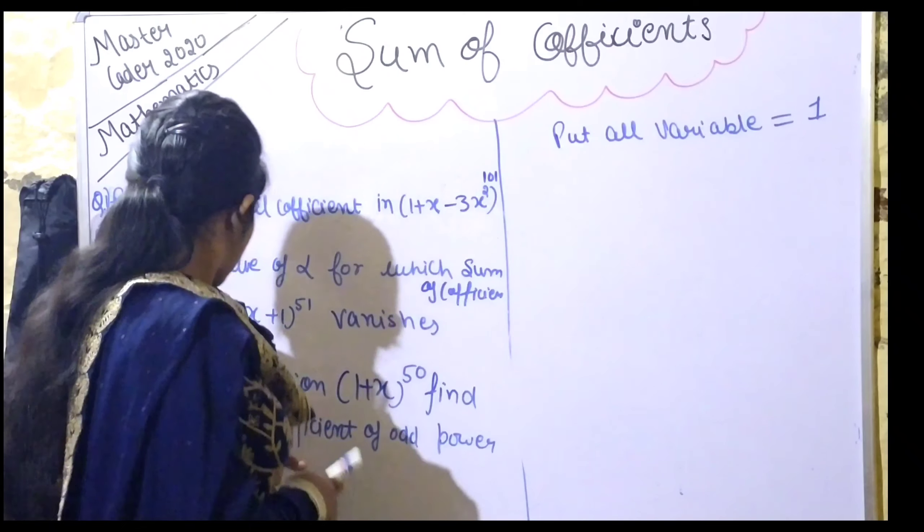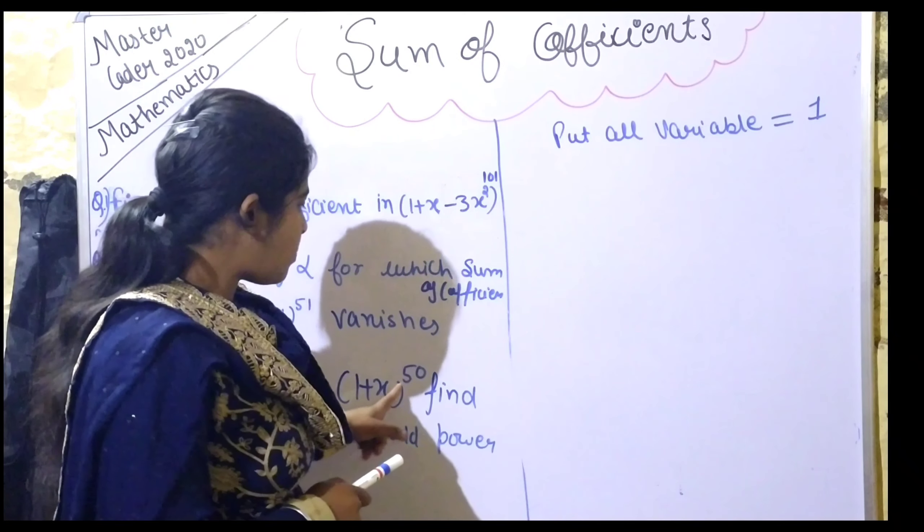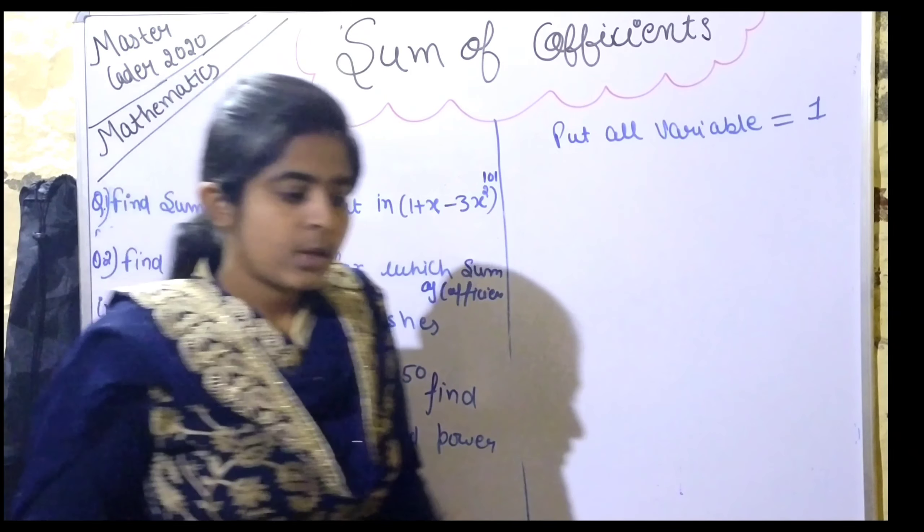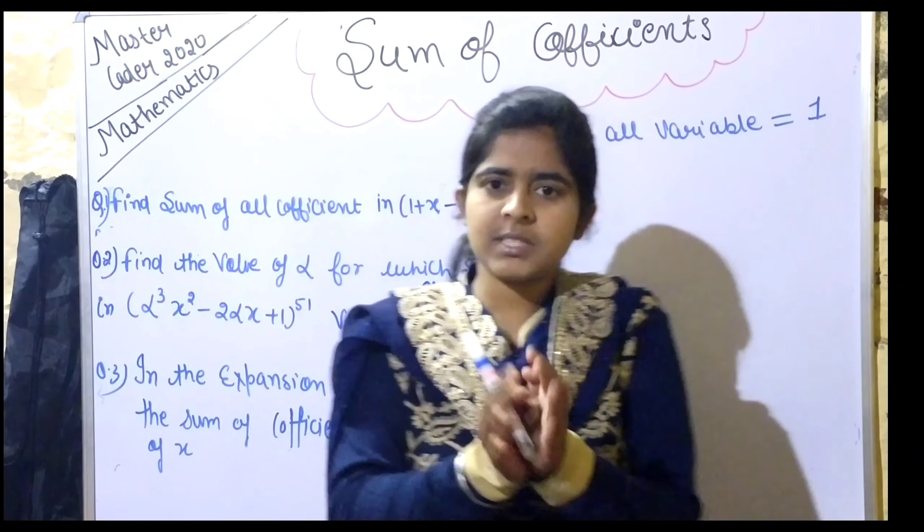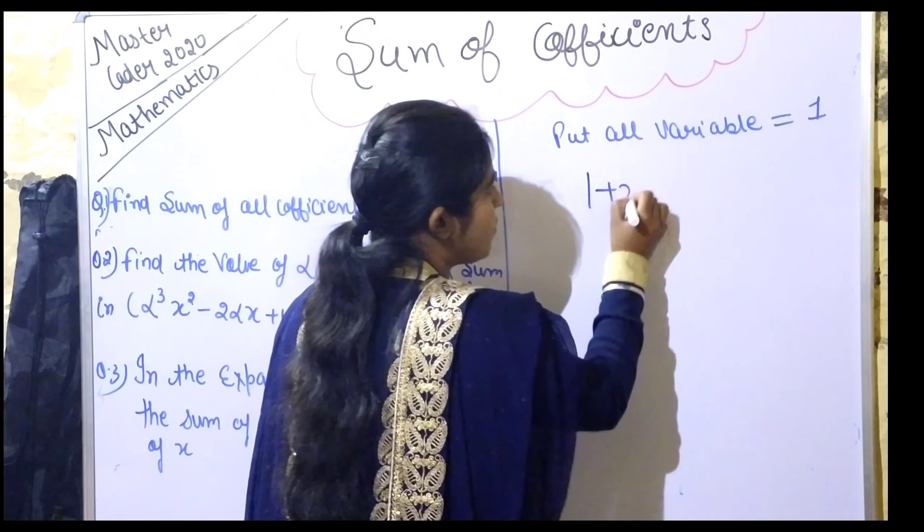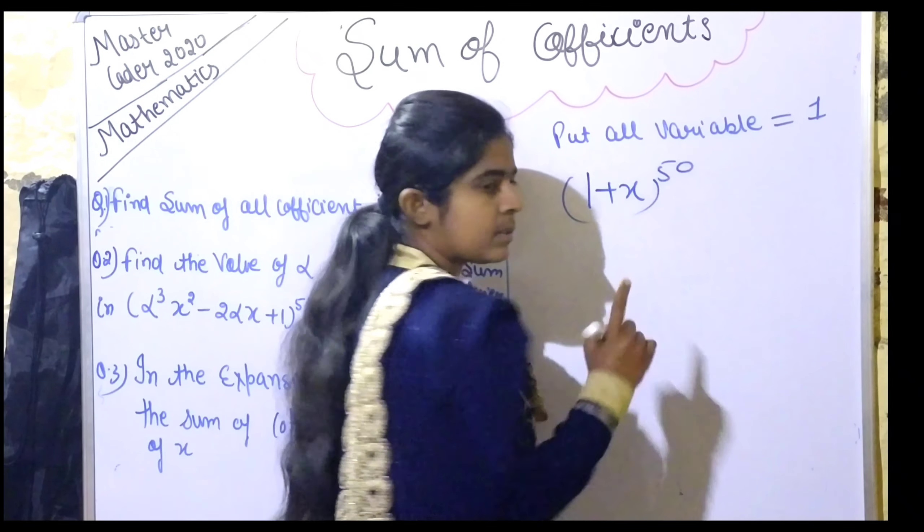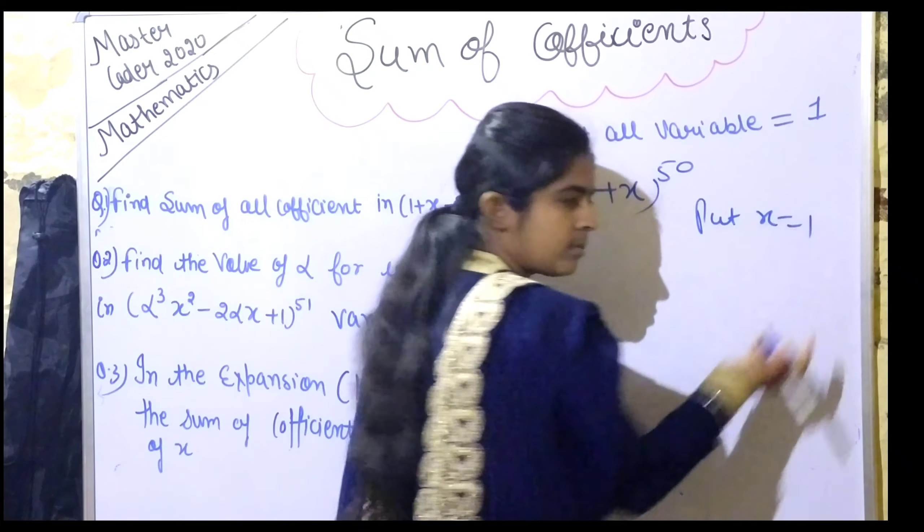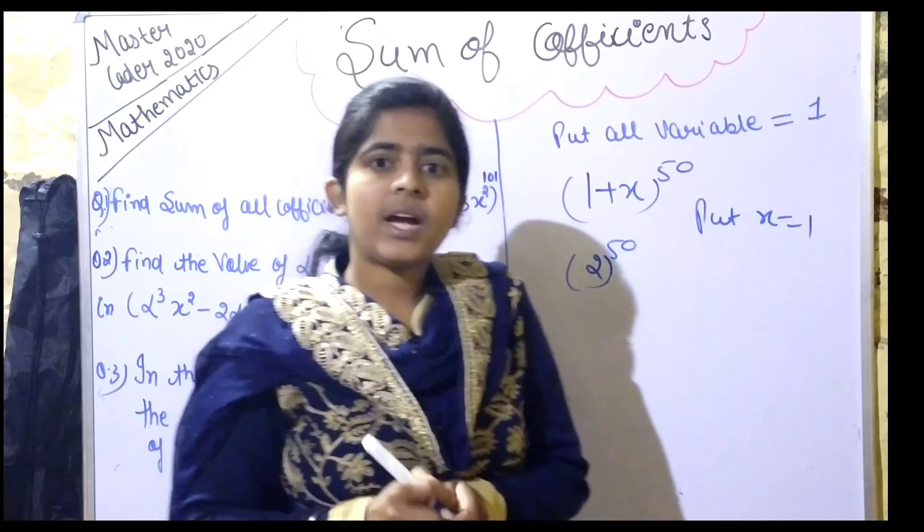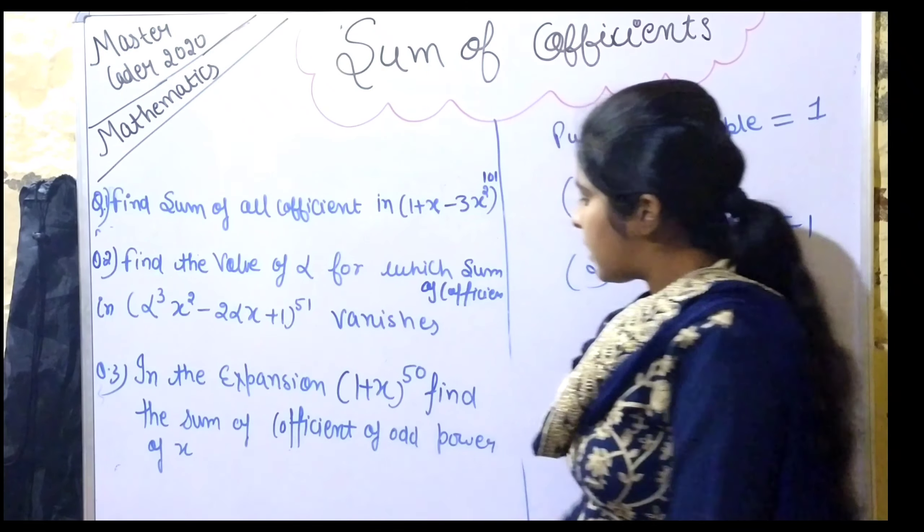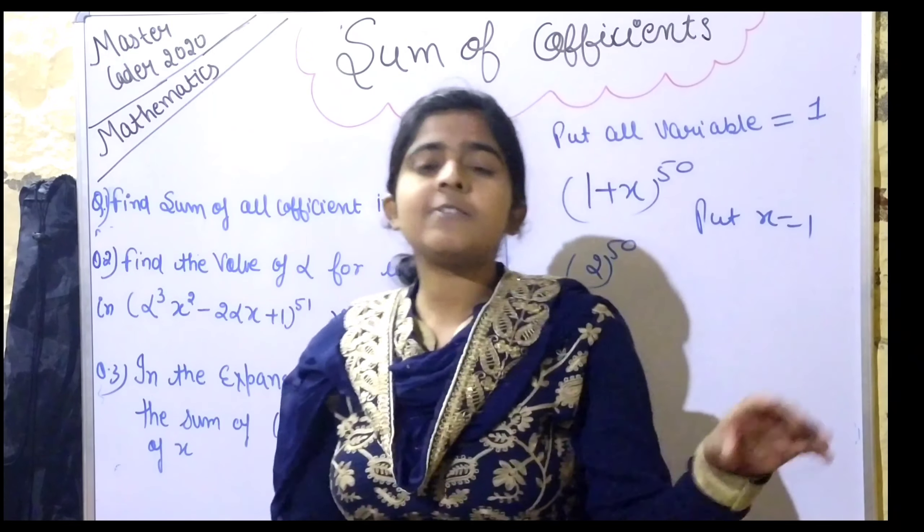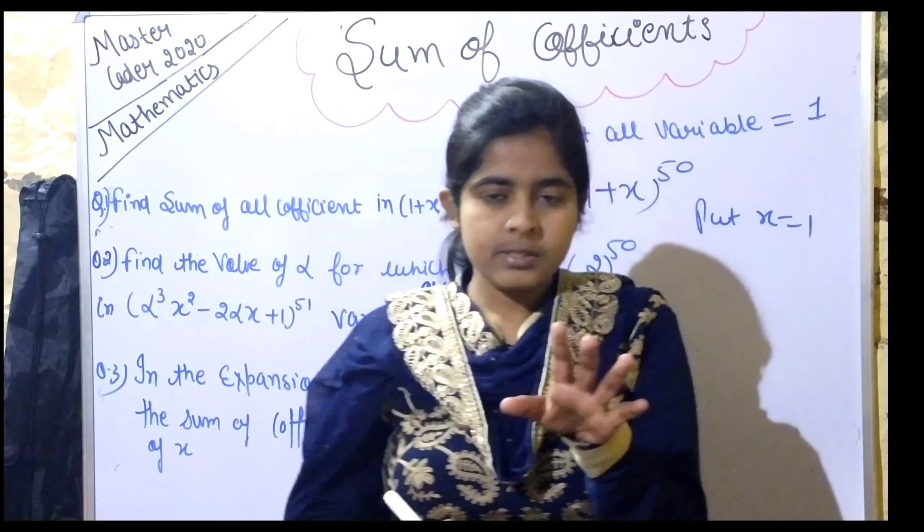Now the next question: in the expansion (1 + x)^50, find the sum of coefficients of odd powers of x. For sum of all coefficients, we easily understand to put the variable equal to one. If I put x = 1, I get (1 + 1)^50 = 2^50. But the question specifically asks for the sum of coefficients of only the odd powers of x.